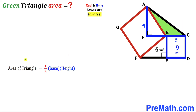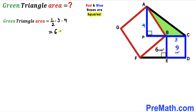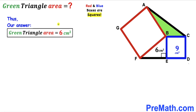For the final step, we calculate the area of the green shaded triangle ABC. Using Area = ½ × base × height, the base BC = 3 cm and the height AP = 4 cm, so Area = ½ × 3 × 4 = 6 cm². The area of the green shaded triangle ABC is 6 cm². Thanks for watching and please don't forget to subscribe.